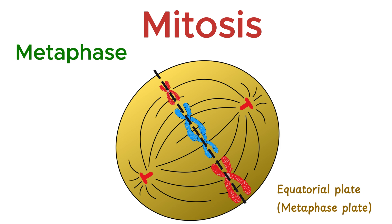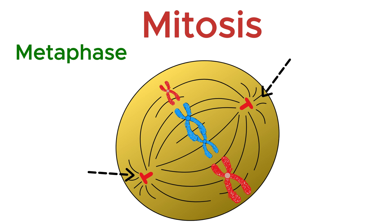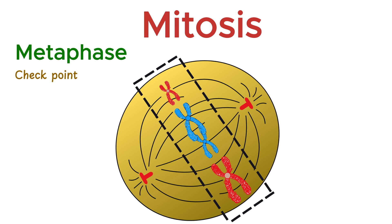This alignment ensures that each daughter cell will receive an exact copy of chromosomes. The spindle fibers, which were formed in prophase, attach to the centromeres of each chromosome through structures called kinetochores. These fibers come from opposite poles of the cell and pull gently from both sides, creating tension and keeping the chromosomes in place at the center. Metaphase is the checkpoint stage — the cell pauses briefly here to ensure all chromosomes are properly attached to the spindle fibers and are perfectly aligned. Any mistake at this stage could result in unequal distribution of genetic material, so accuracy is key in metaphase.